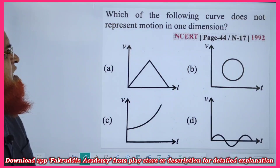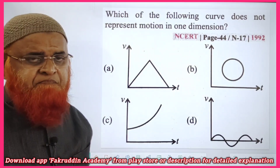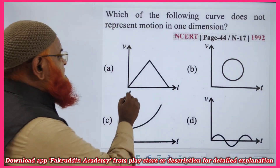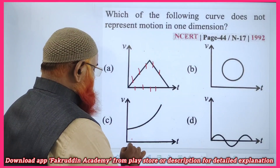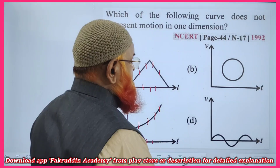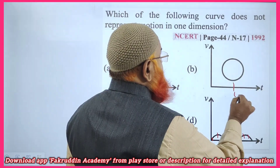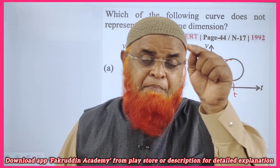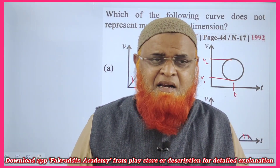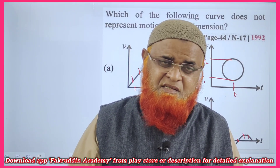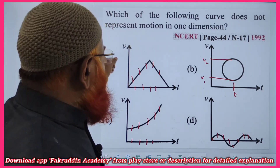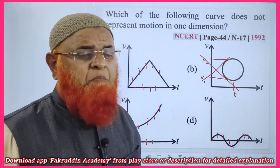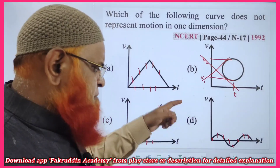Which of the following curves does NOT represent motion in one dimension? The only logic: at any particular time, a body should not have two velocities. In graphs A, B, and C, at every time there is only one velocity. But in the fourth graph, at a particular time there are two velocities — V1 and V2. A body cannot have two velocities at the same time; your car at exactly 10 o'clock cannot have two velocities. So that graph is impossible and does not represent motion in one dimension.